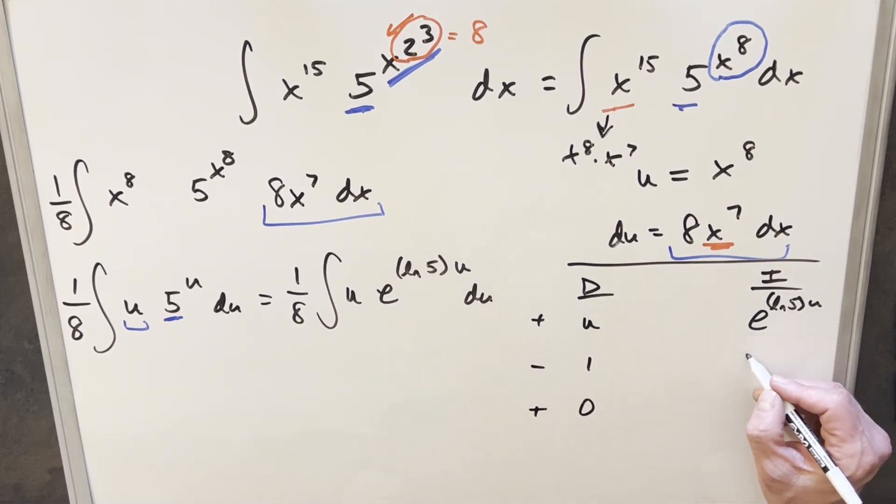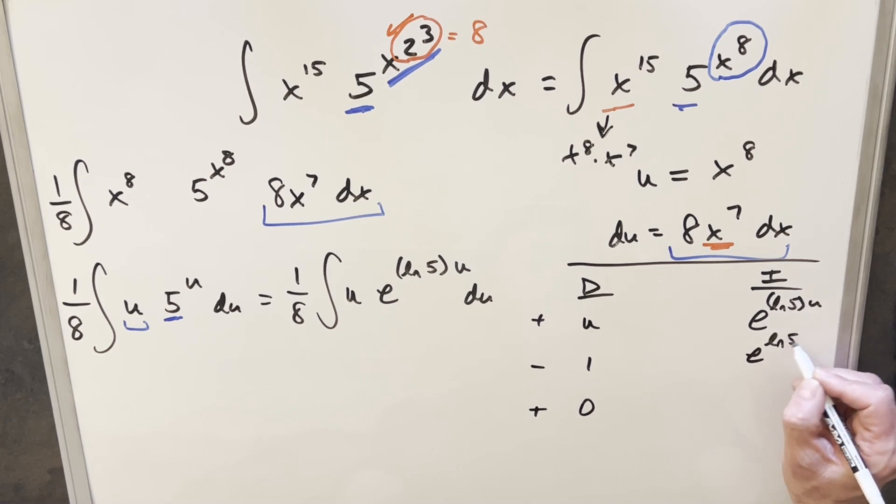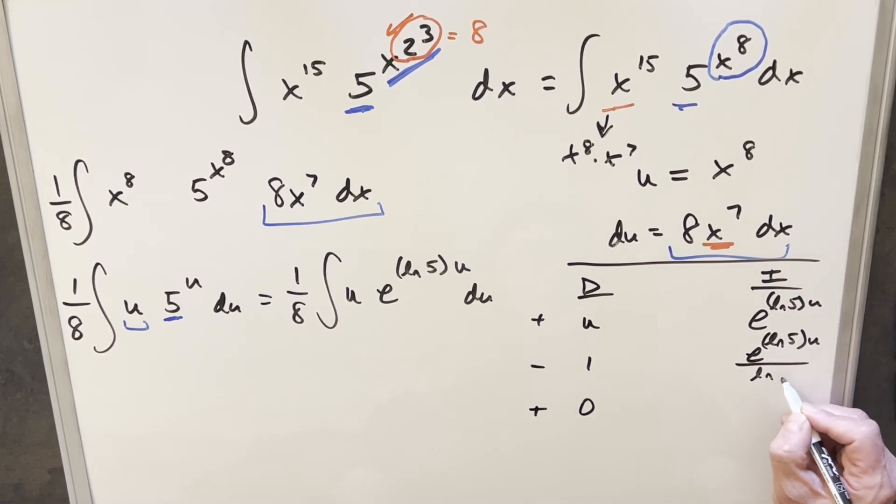Then here, integrating this, we're going to have e to the ln 5 u, but then we need to bring ln 5 out in the denominator. And then we integrate again. This ln 5 is just a constant, so it's really the same thing, but we have to bring out another copy of ln 5. So then what happens? We bring out another copy, we end up with ln 5 squared.